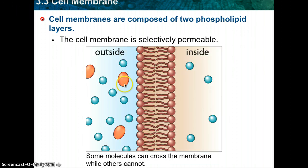The cell is selectively permeable, which means it's going to allow some things in and some things don't get to come in — it depends on what exactly the thing is. The cell membrane regulates what enters and leaves the cell.